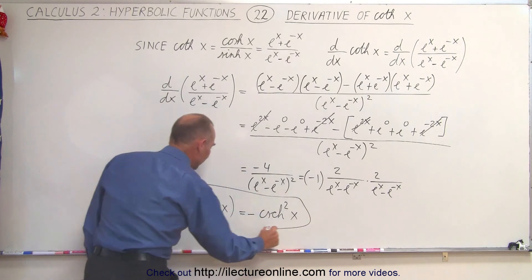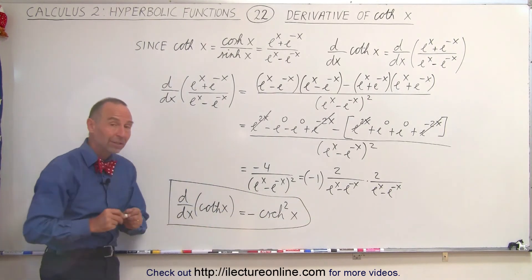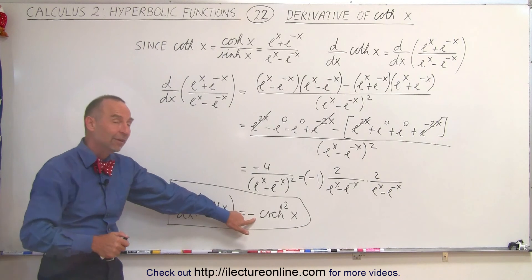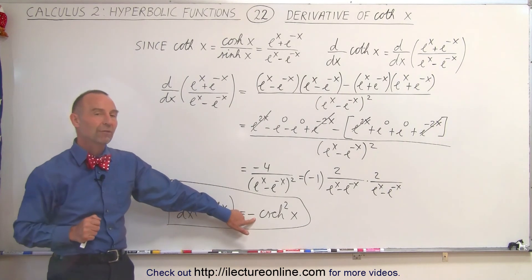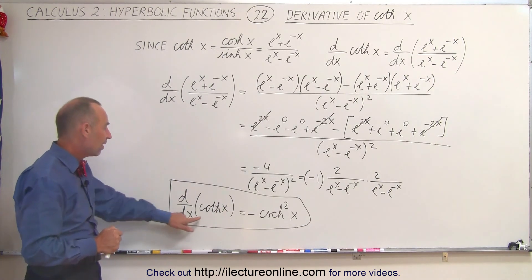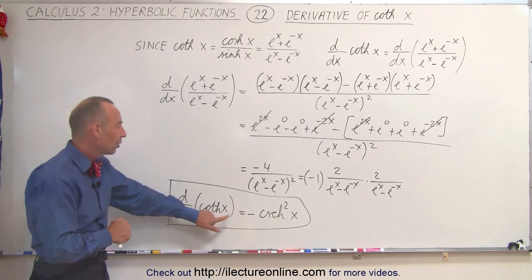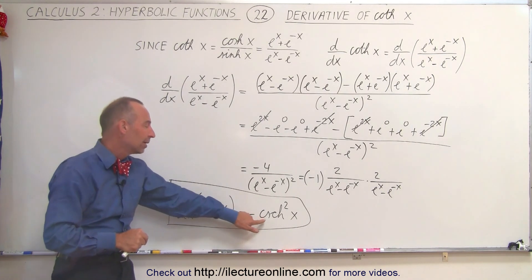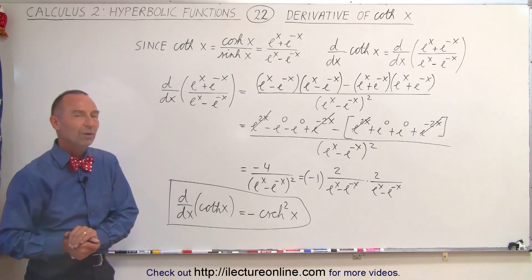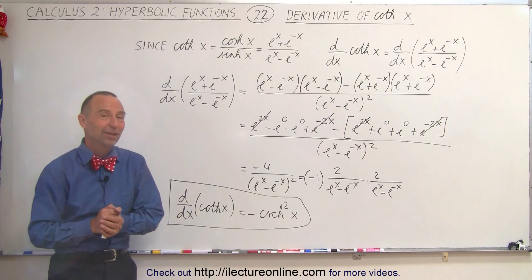So when we take the derivative of the hyperbolic tangent of x, we get positive secant squared of x. When we take the derivative of the hyperbolic cotangent of x, we get negative hyperbolic cosecant squared of x. And that's how it's done.